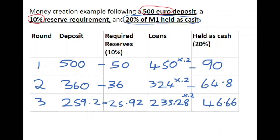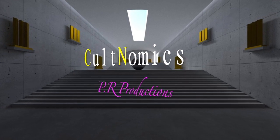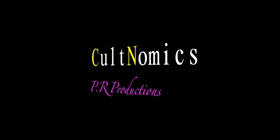We can see that this process would continue in terms of money creation. The initial €500 deposit creates, in our simple example here, three rounds of separate loans. This would continue on until the loans reach zero, and we would see the total amount of money created. I hope you come back to Cultnomics soon — bye for now.